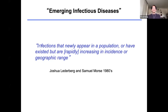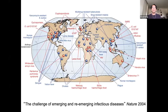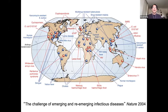The formal definition of emerging infectious diseases was coined in the 1980s by Josh Lederberg and Samuel Morse: these are infections that newly appear in a population, or that have existed and are rapidly increasing in incidence or geographic range. There are many many such diseases — viral, bacterial, all over the world. Here is a figure from a review written more than 15 years ago by Tony Fauci, showing all these newly emerging infections.